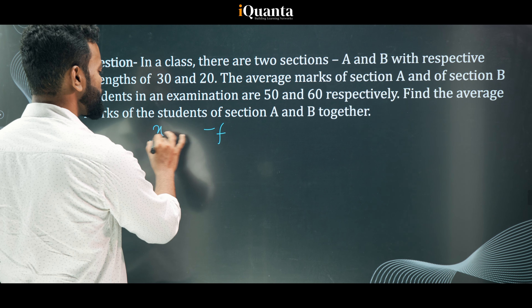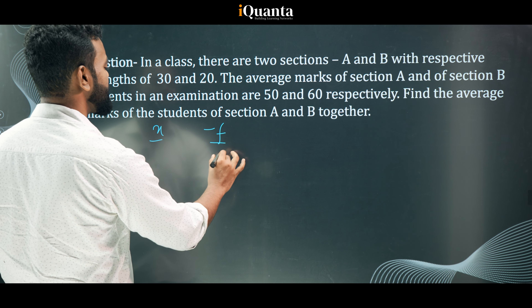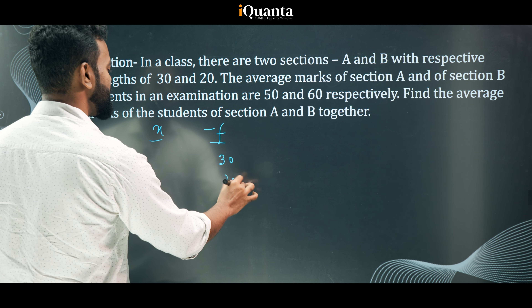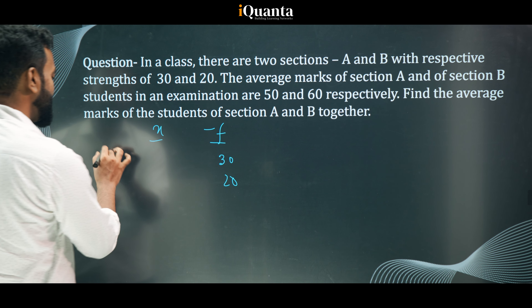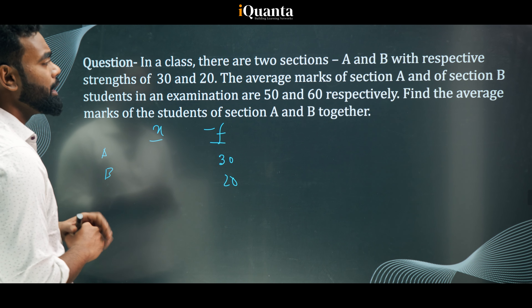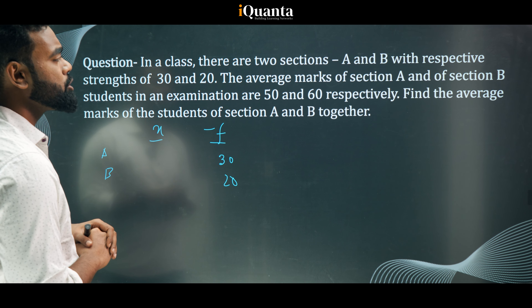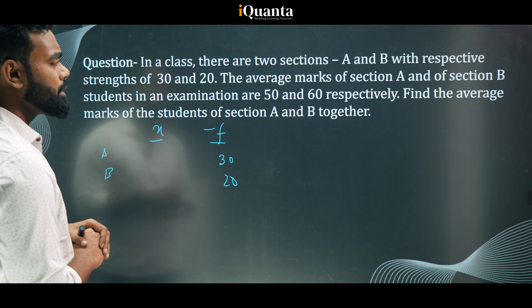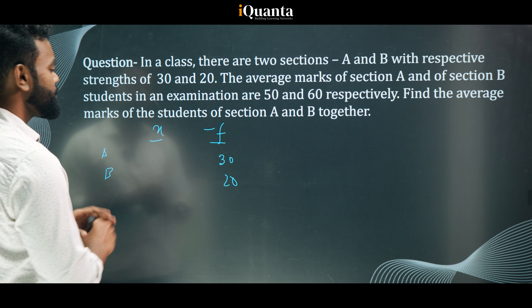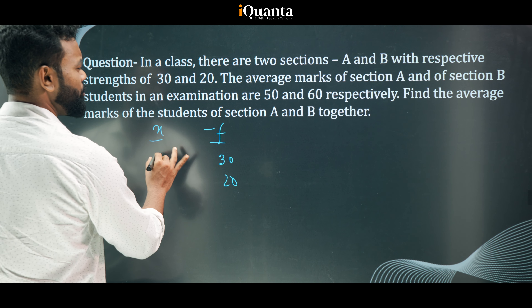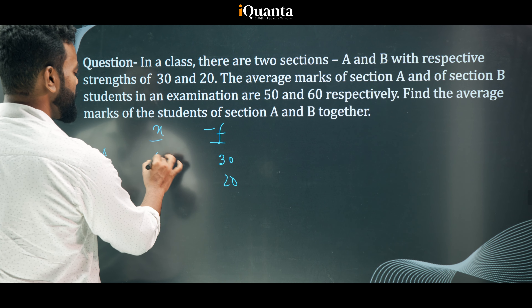Setting up the table: the frequency for section A is 30 and for section B is 20. The average marks of section A is 50 and the average marks of section B is 60.